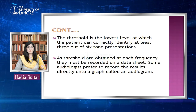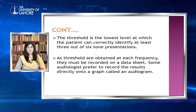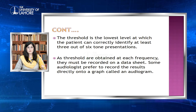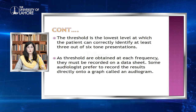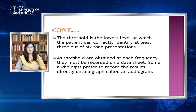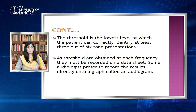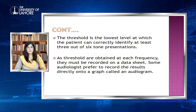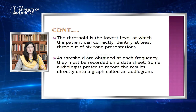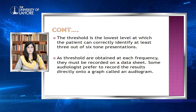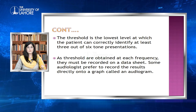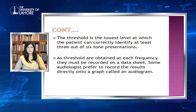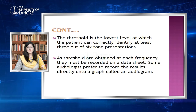The threshold is the lowest level at which the patient can correctly identify at least 3 out of 6 presentations. As thresholds are obtained at each frequency, they must be recorded on the data sheet. All results are recorded on a graph called an audiogram. Some audiologists prefer to record results directly on the audiogram, and some machines have a direct attachment with a laptop so the audiogram can be printed automatically.